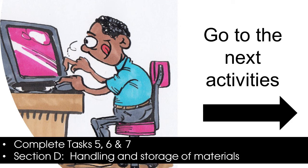Before you continue to the next section, complete tasks five, six, and seven in your workbooks. You will find the answers to the questions by reading through Section C in your participant handbook. After completing the three tasks, you may continue to Section D, which is all about the handling and storage of materials.